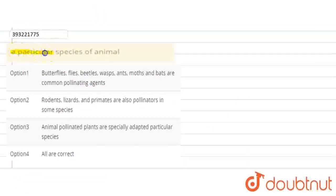The question is about particular species of animals. Butterflies, flies, beetles, wasps, ants, moths and bats are common pollinating agents. Rodents, lizards and primates are also pollinators in some species. Animal-pollinated plants are specially adapted to particular species.